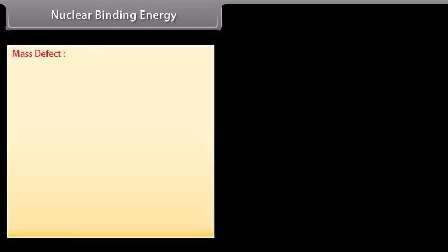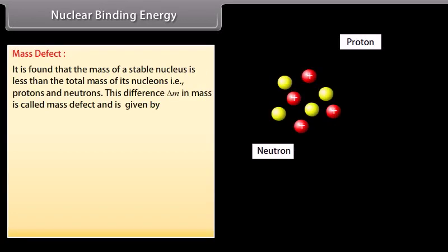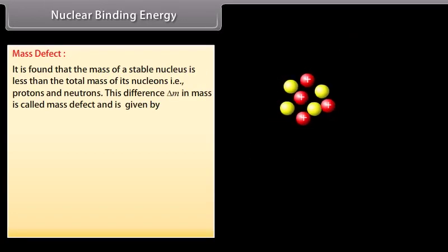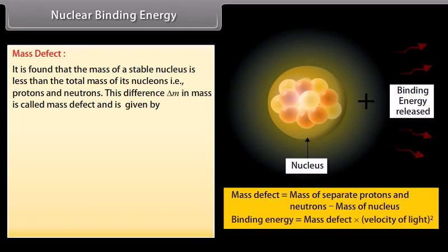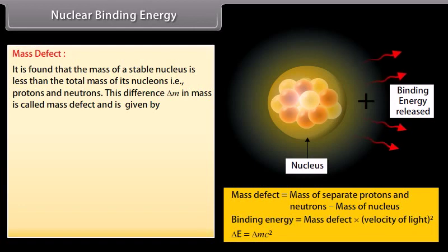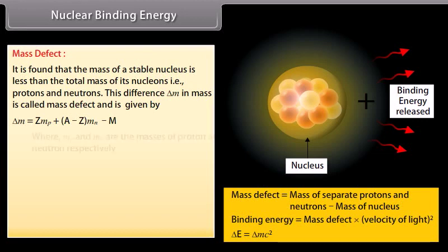Nuclear binding energy. Mass defect. It is found that the mass of a stable nucleus is less than the total mass of its nucleons, that is protons and neutrons. This difference delta M in mass is called mass defect and is given by delta M is equal to ZMP plus E minus Z into MN minus M, where MP and MN are the masses of proton and neutron respectively.